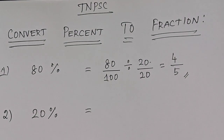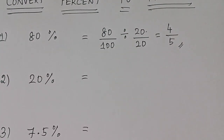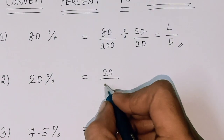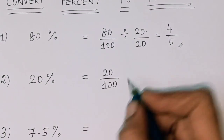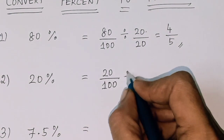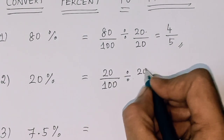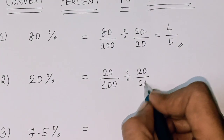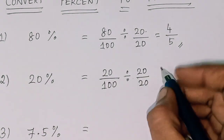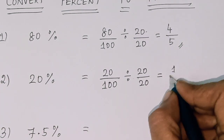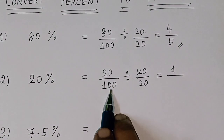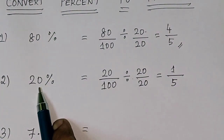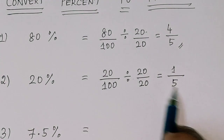So the answer is 4 by 5. This is the fraction. Second one: 20 percent. So 20 divided by 100, divide both numerator and denominator by 20. So 20% converts to fraction 1 by 5.